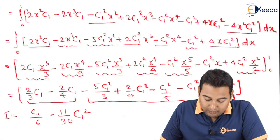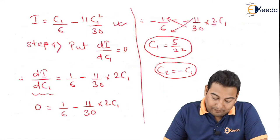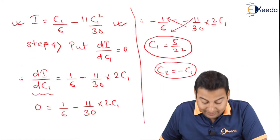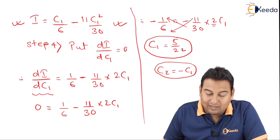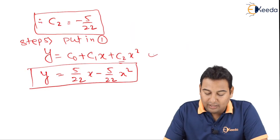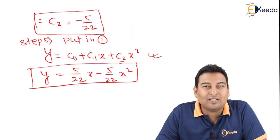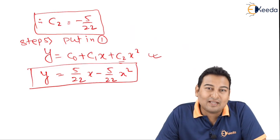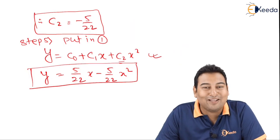Step 3: we solved the integration by substituting y and y'. Step 4: putting dI/dc1 = 0 gave us the constant c1. Step 5: substituting back in equation 1 gave the final solution y = (5/22)x − (5/22)x². These are the five fixed steps and the problem is straightforward if you practice well. In the next video we'll discuss one more example on Rayleigh-Ritz method.